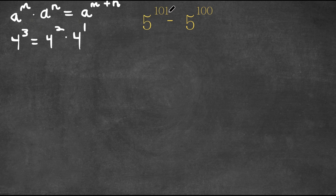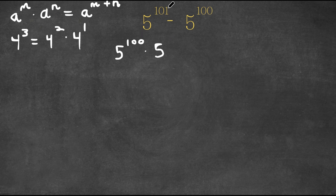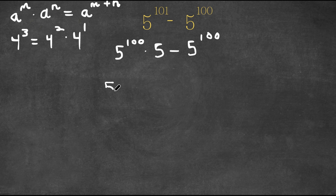So now what I'm going to do to 5 to the power of 101 is rewrite it as 5 to the power of 100 times 5, since 5 is the same as 5 to the power of 1, and 100 plus 1 is 101. Then we subtract 5 to the power of 100. Now that both terms have 5 to the power of 100, I'm going to factor it out.